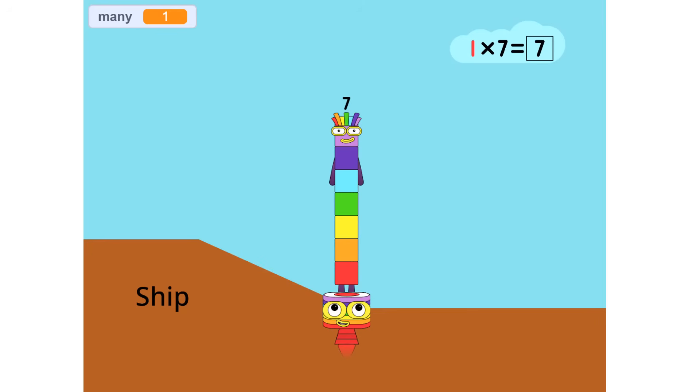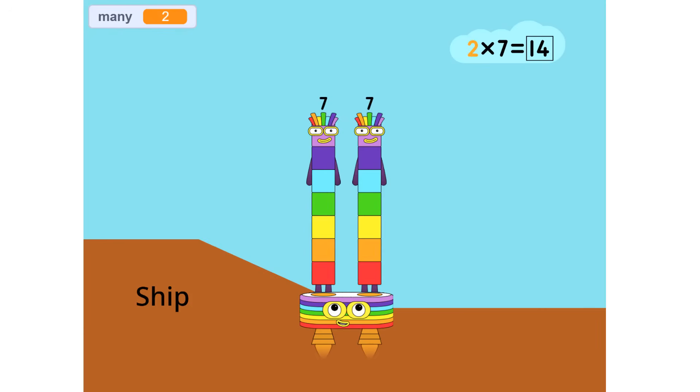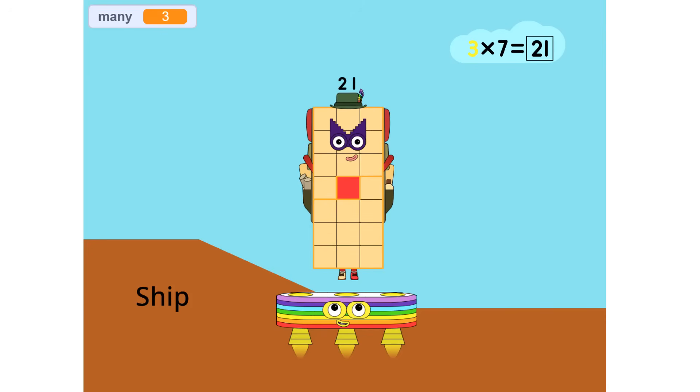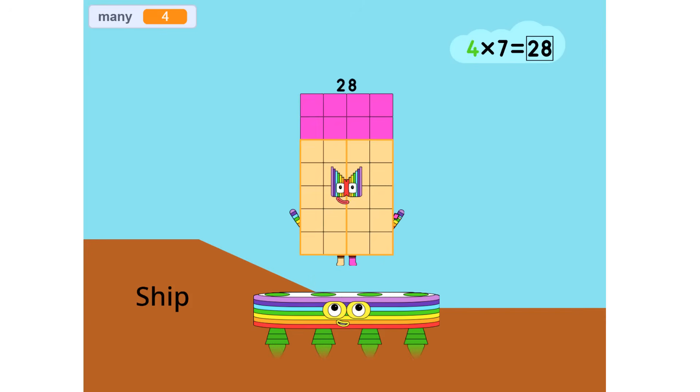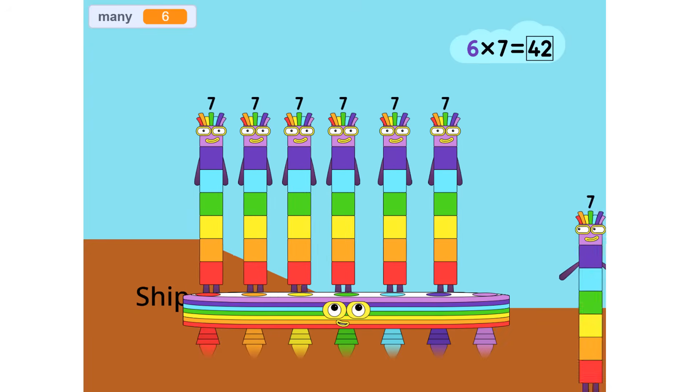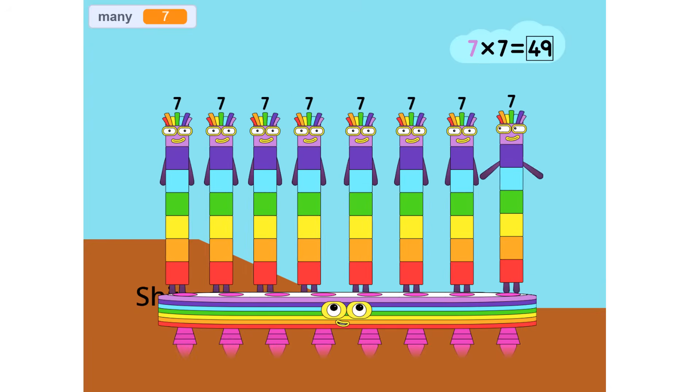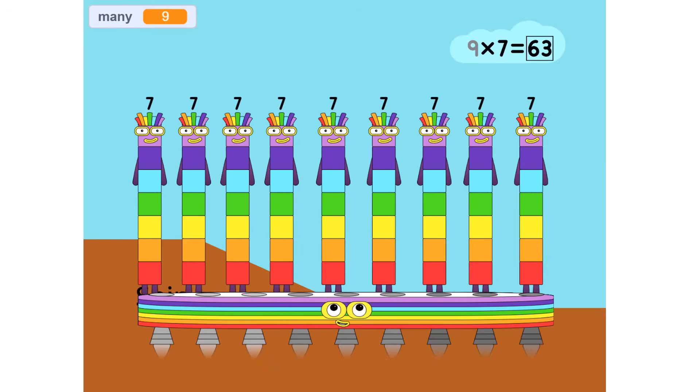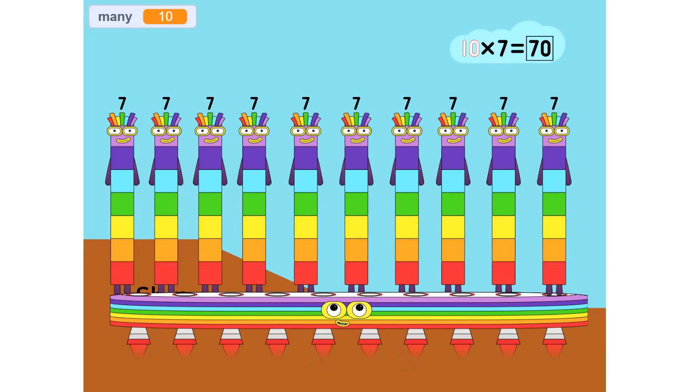1 7 is 7. 2 7s are 14. 3 7s are 21. 4 7s are 28. 5 7s are 35. 6 7s are 42. 7 7s are 49. 8 7s are 56. 9 7s are 63. 10 7s are 70.